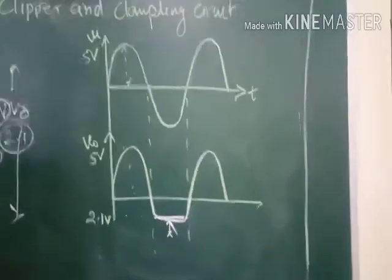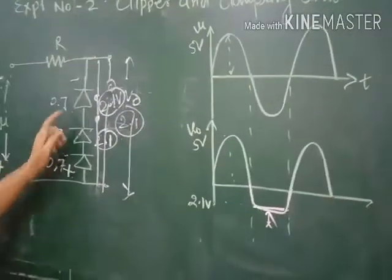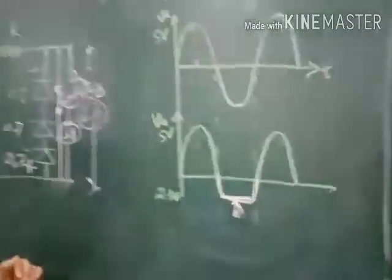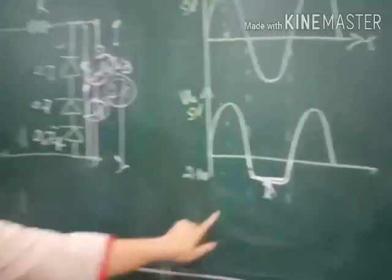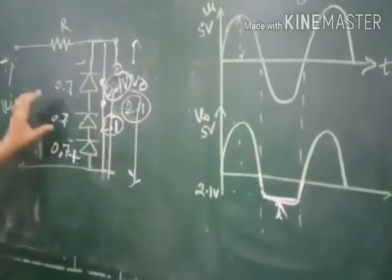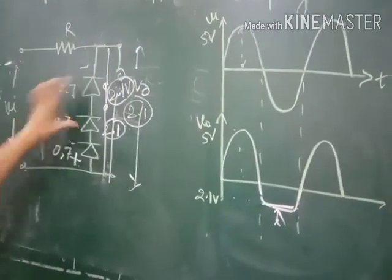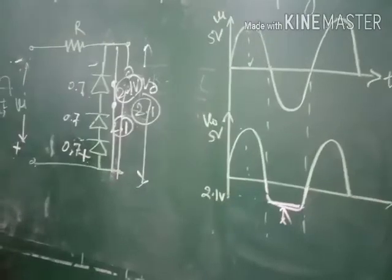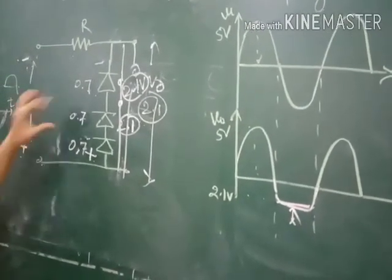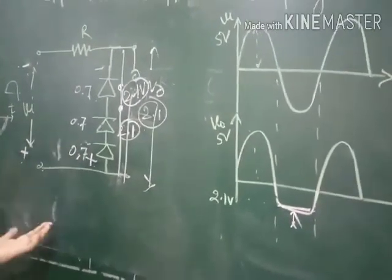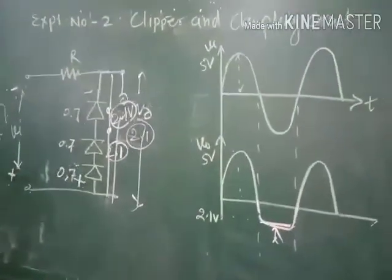If we want to perform positive clipping, we simply change the position of the diode and it will clip the positive part instead. To clip at 0.7V, connect one diode; to clip at 1.4V, connect two diodes. Depending on the application — at what voltage and which part we want to clip — we connect the appropriate number of diodes, and the diode position determines whether positive or negative clipping occurs.